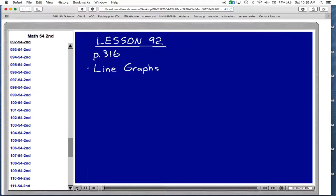Lesson 92 starts on page 316 and it's about line graphs. Now we've been doing some lessons on finding missing information. We've been given different statements where we had to find information from those statements. We've used pictographs and bar graphs in lesson 85. Now we're going to use something called a line graph.